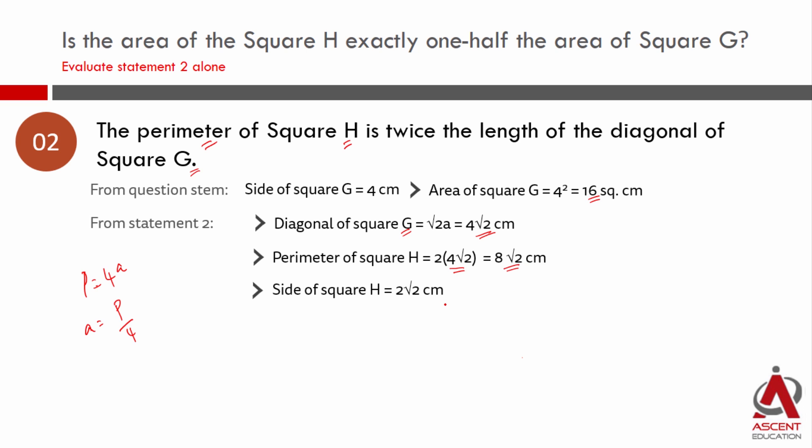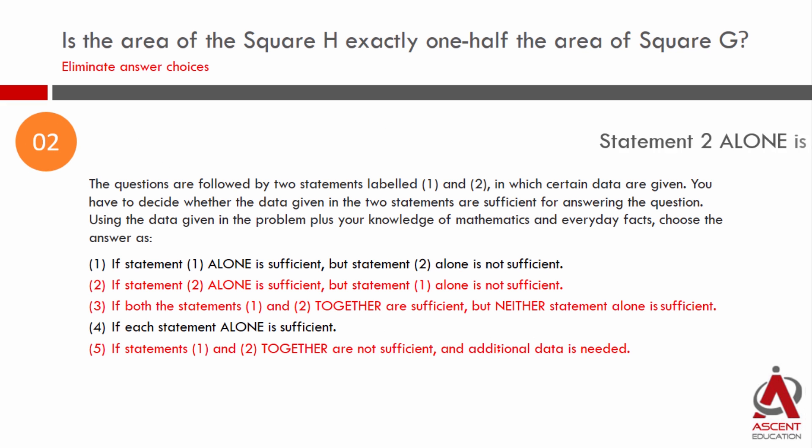Area of a square is the square of its side. 2 root 2 squared is 8 square centimeters. Are we able to get an answer? Area of square G is 16, area of square H is 8. So area of square H is half the area of square G. Statement 2 alone is also sufficient. Statement 1 is sufficient, statement 2 is also sufficient. Obviously, answer choice 4 is the correct answer.